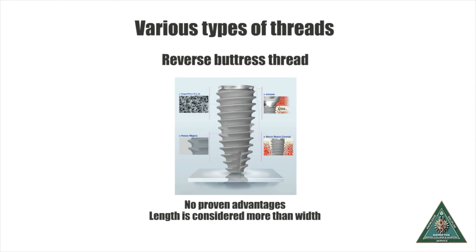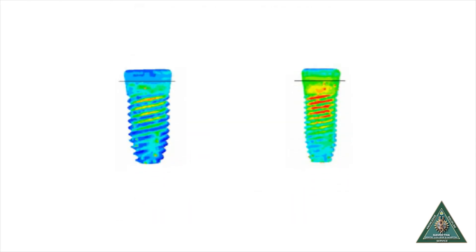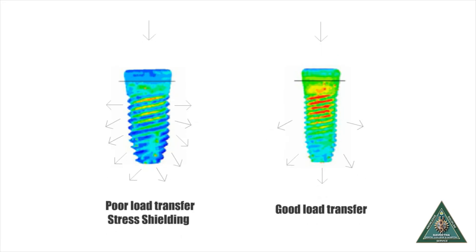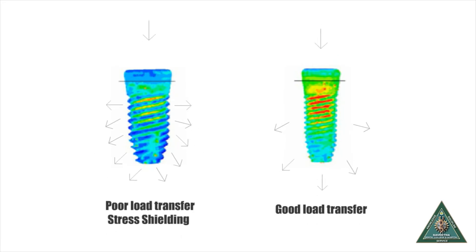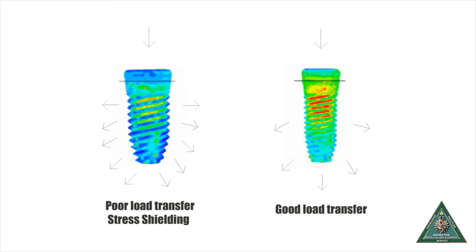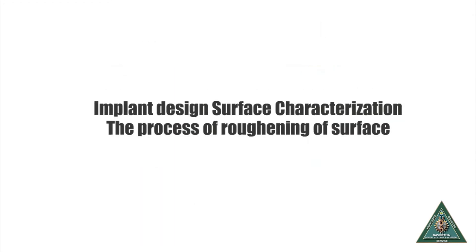Clinically speaking, too much width is not beneficial, as the implant will absorb load without transferring it to the bone — this is called stress shielding. It is therefore an established custom to give priority to the length rather than the width of the implant. Surface characterization is defined as the process of roughening the surface to facilitate better implant-bone bonding.